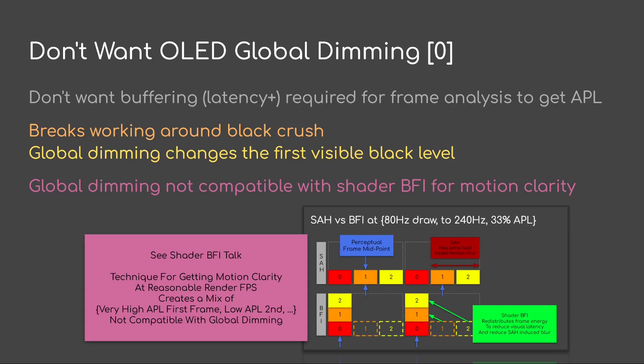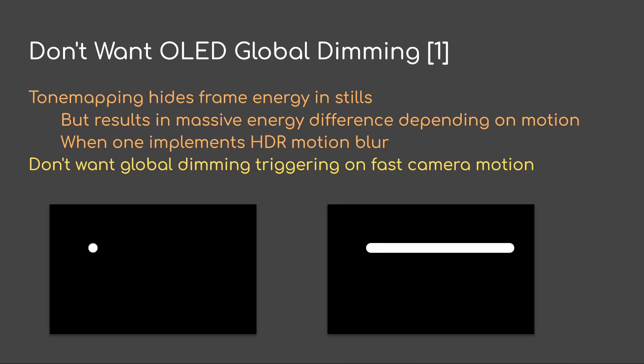The extra clarity you get with black frame insertion with energy redistribution is super important. It also enables the game, for instance, to render three times less frame rate — say at 240Hz — and get the same clarity as you would at 240Hz. Another issue is that tone mapping hides frame energy in still frames, and this results in a massive energy difference depending on motion, if one is implementing motion blur with HDR.